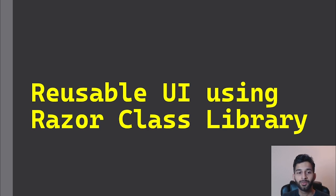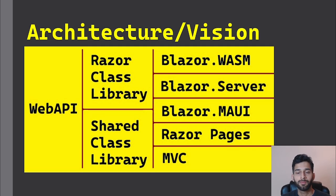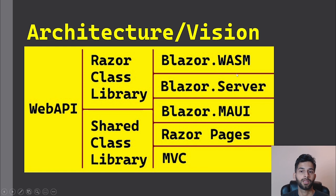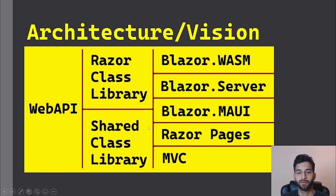In this video I'm going to talk about how you can create reusable UI using Razor Class Library. In the last couple of videos I've been talking about how to move most of our code from our Blazor WASM project to a shared class library. In this video I'm going to try and move the components from the Blazor WebAssembly project to a Razor Class Library, so we could use these common classes and components in different UI frameworks.